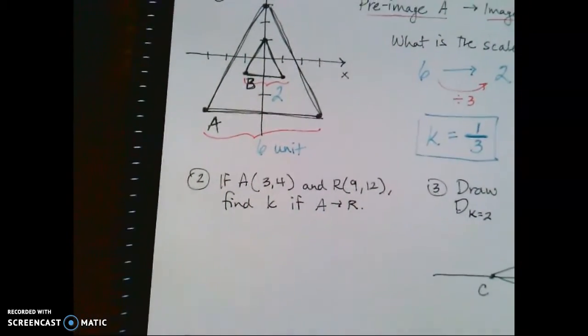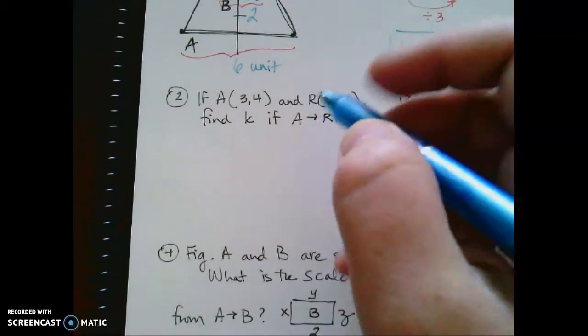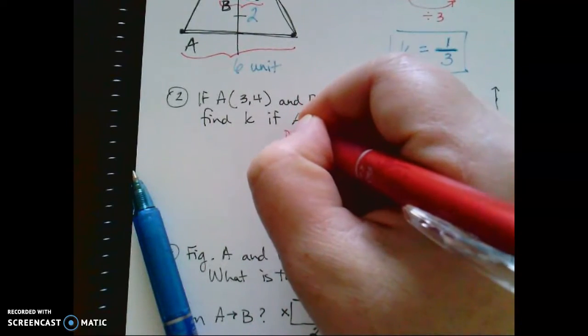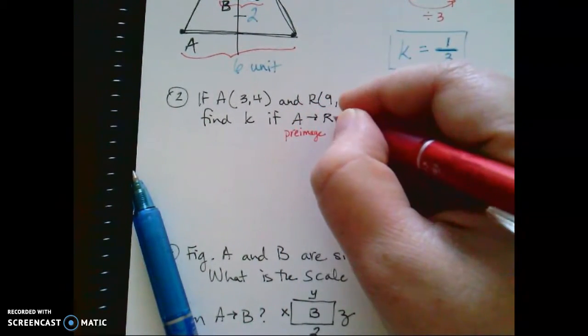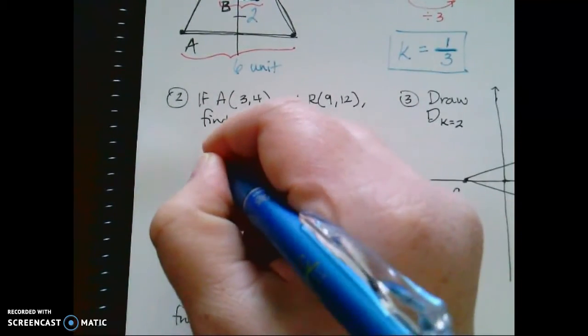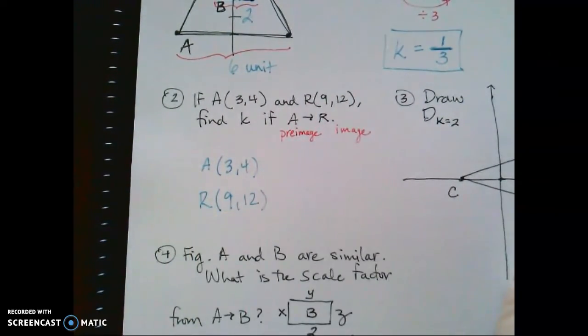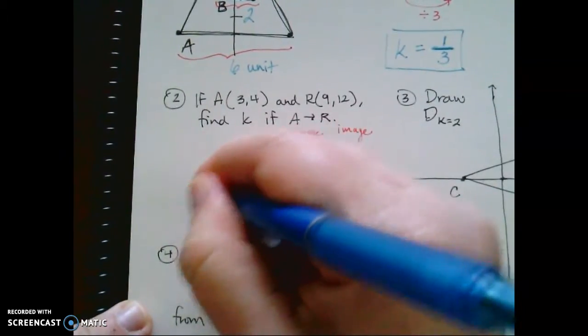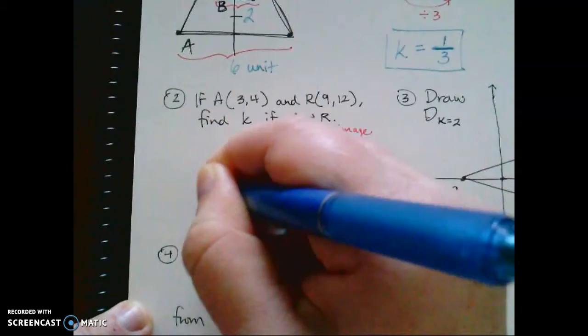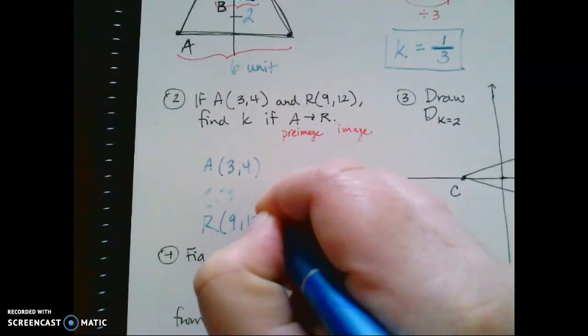Now when we look at problem number two, we're told A is at 3-4, R is at 9-12. Find K. Find the scale factor if the pre-image is A and the image is R. So again, the order in which we're gonna move from one figure to another does matter. Okay, so if we look at A, A is 3-4, R is 9-12. Okay, let me actually... I found these really cool pens. They erase. Okay, I'm gonna spread this out just a little bit.